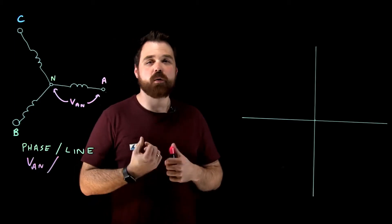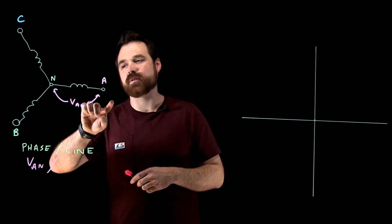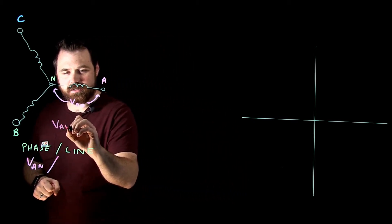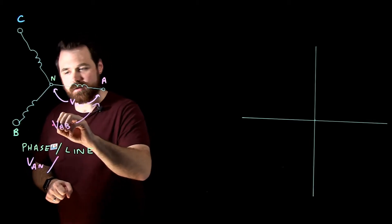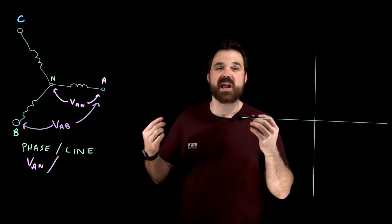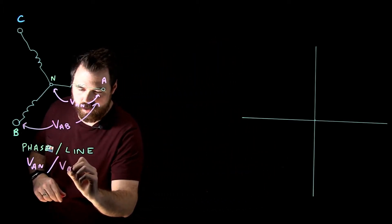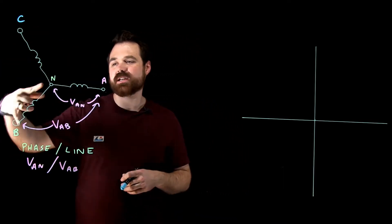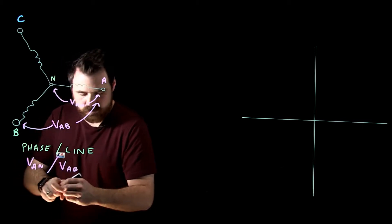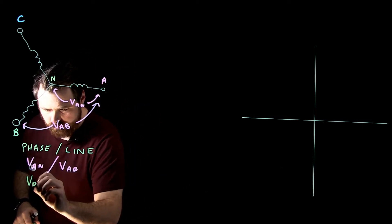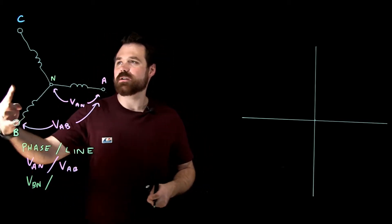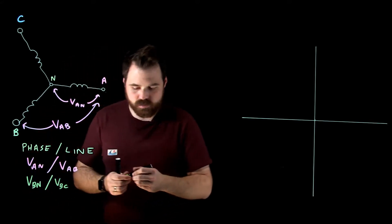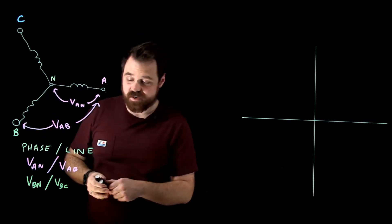The line voltage would be going from A to B, so it actually includes both of those phases. That would be V_AB. A to B is what we would call our line voltage. And that goes around just like that. B to N would be our B phase voltage. B to C would be our line voltage. And then last but not least, C to N would be our C phase voltage.